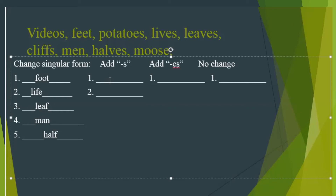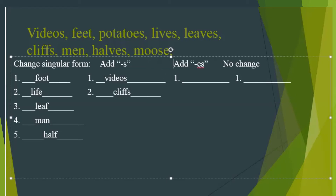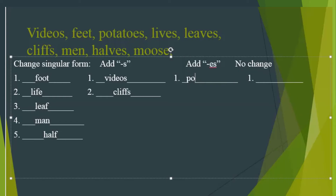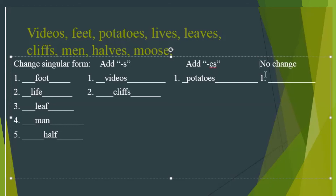In the second column, it says add S. So there are two words that take an S at the end: videos and cliffs. In the third column, add ES — there is one word that adds ES at the end, and that is potatoes. In the last column, it says there are no changes needed. So this word is the same in the singular and in the plural form: moose.